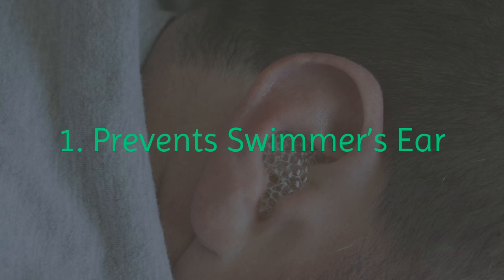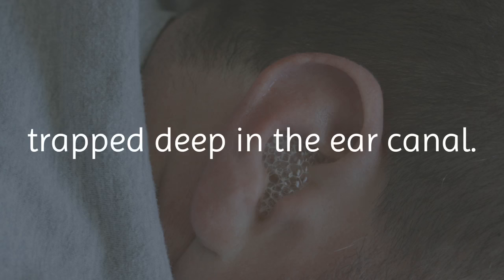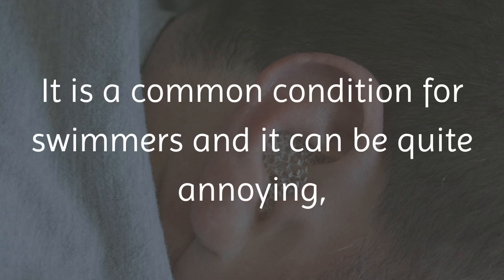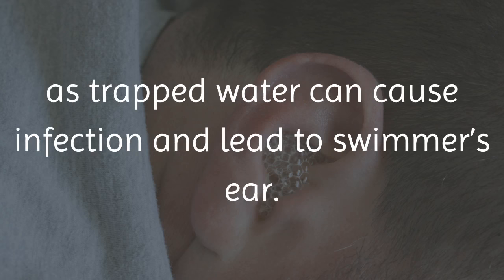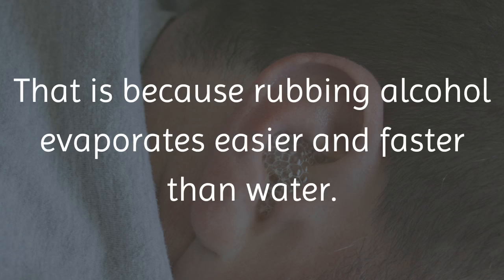1. Prevent Swimmer's Ear. Swimmer's ear happens when water gets trapped deep in the ear canal. It is a common condition for swimmers, and it can be quite annoying, as trapped water can cause infection and lead to swimmer's ear. You can prevent an infection from occurring with rubbing alcohol.